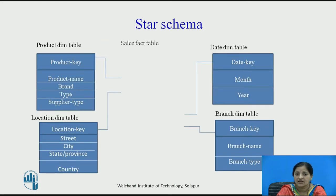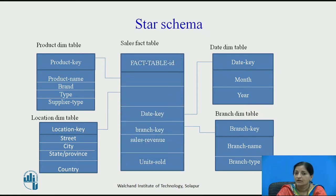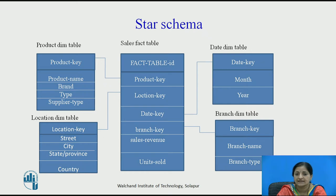Let us see the star schema. We have taken the example of sales revenue. There is one fact table called the sales fact table and multiple dimension tables: product dimension table, date dimension table, location dimension table, and branch dimension table. The fact table consists of two types of attributes: foreign keys — product key, location key, date key, and branch key — and two measures: sales revenue and units sold. The dimension tables describe these attributes and are joined to the fact table using foreign keys. The relationship between the fact table and dimension table is many-to-one.